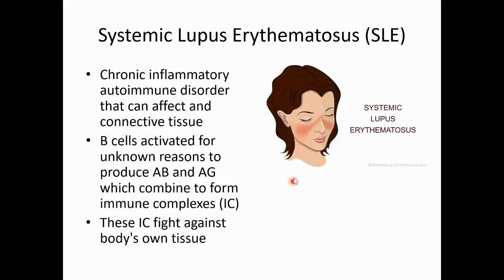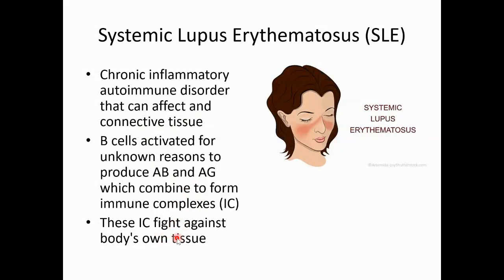Let's talk a little bit about lupus — SLE, systemic lupus erythematosus, 'erythematosus' meaning red. It's a chronic inflammatory autoimmune disorder that can affect vessels and connective tissue. The B cells are activated for unknown reasons to produce antibodies and antigens, and then these combine to form immune complexes.